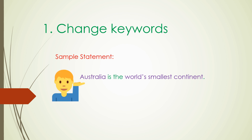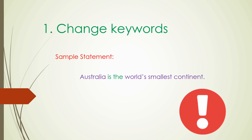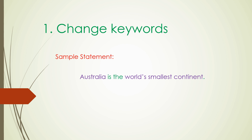Look at what I did with the sample statement — I marked some words purple. These are the keywords in the sentence. Keywords, by the way, are also called important words in a sentence. So, to use paraphrasing style number one, all you have to do is look for keywords in a sentence, then replace them with their synonyms.